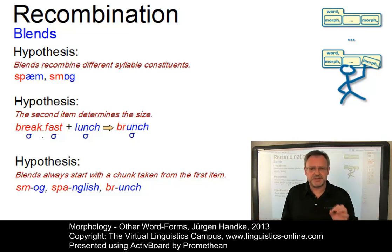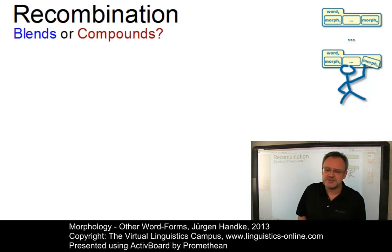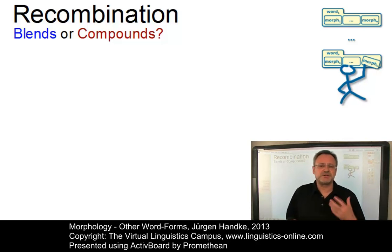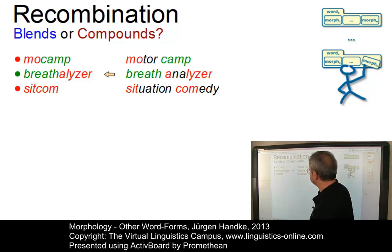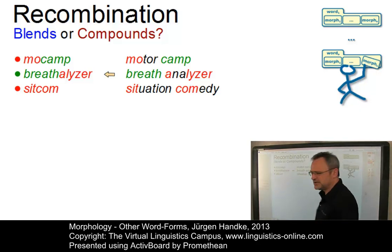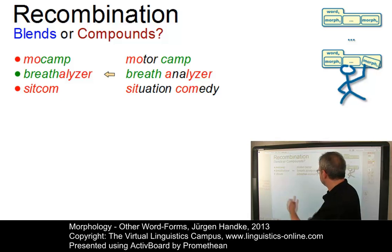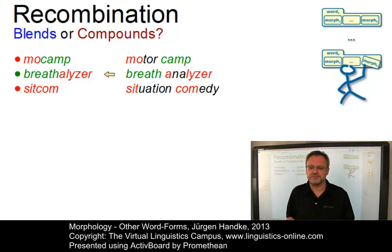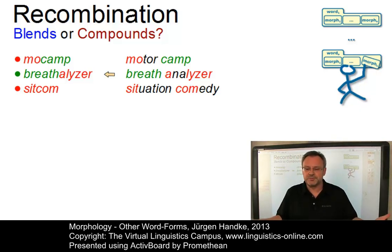Blends can easily be mixed up with so-called abbreviated compounds. Abbreviated compounds are existing compounds that can be shortened to form a new word. For example, 'motor camp' can be abbreviated to 'mocamp', 'breath analyzer' to 'breathalyzer', and 'situation comedy' to 'sitcom'. Abbreviated compounds are all endocentric: a motor camp is a camp, a breathalyzer is an analyzer, a sitcom is a type of comedy. The abbreviations may occur in the modifier, in the head, or even in both parts of the compound.